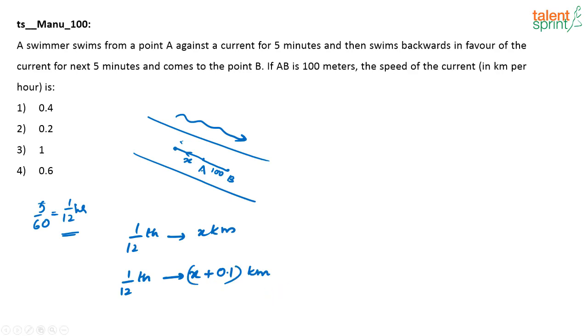And what should you find out? You have to find the speed of the current. Now, speed is distance divided by time. So to travel X kilometers, he takes 1 by 12th of an hour. This equals U minus V, the upstream speed.